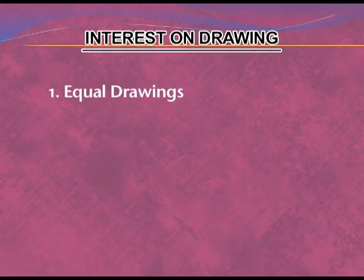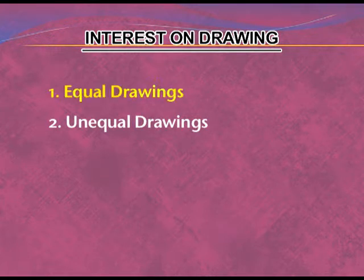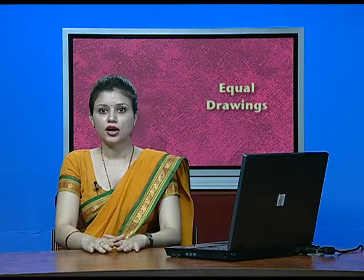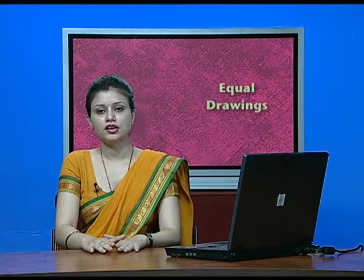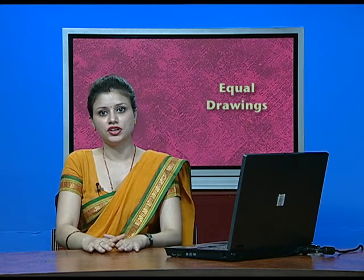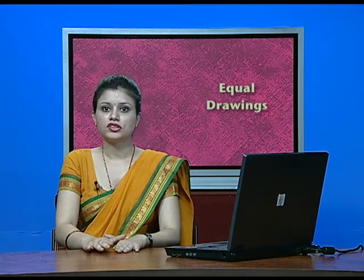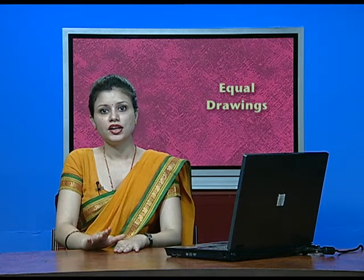First we will discuss equal drawings. Equal drawing means whenever an amount is withdrawn, it will be fixed. For example, if one thousand is drawn in January, then one thousand in February, one thousand in March, one thousand in April, and so on.